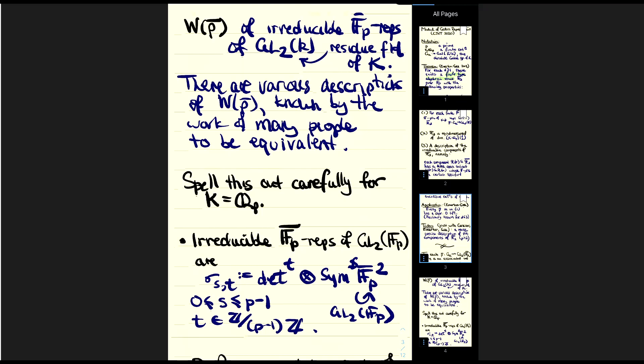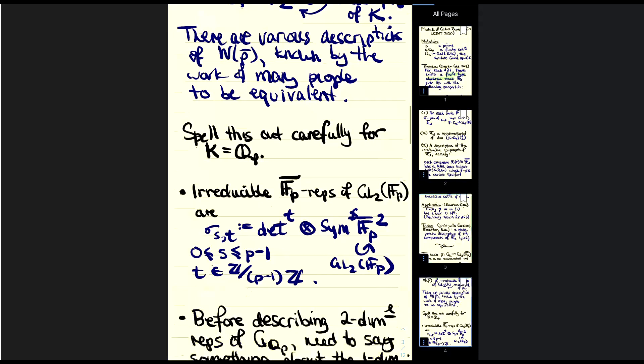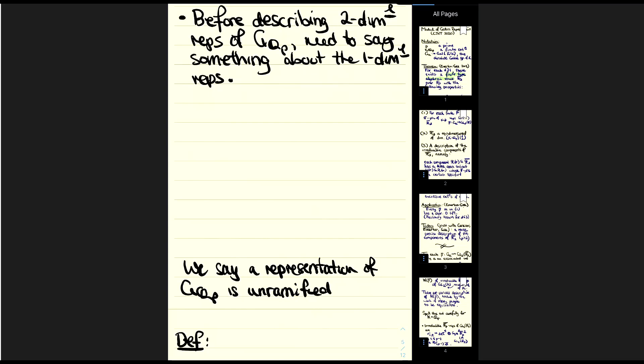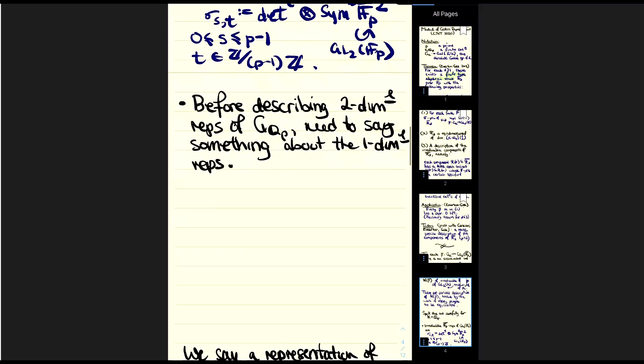Those are the irreducible F̄_p representations of GL_2(F_p) — the elements of my set W(ρ̄). Now I need to tell you how to associate a set of these representations to a two-dimensional representation of the Galois group of Q_p. Before describing two-dimensional representations of G_{Q_p}, I need to say something about one-dimensional representations.